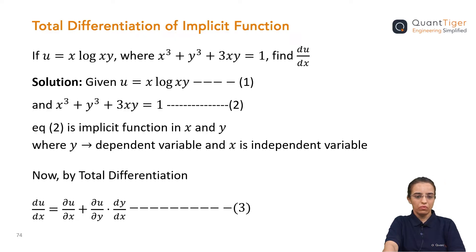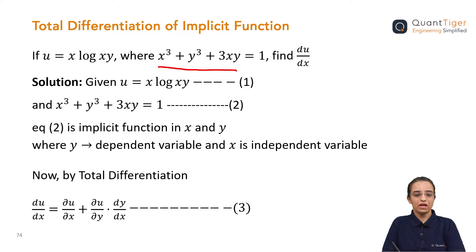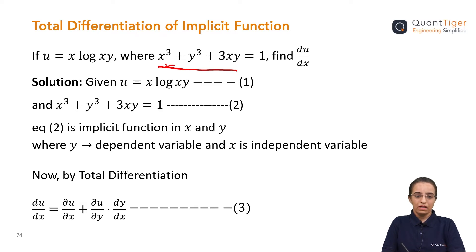We will now see a question on how we can use total differentiation for implicit functions. I have taken here an implicit function — a relation in x and y is given: x³ + y³ + 3xy. Previously, x and y values were given in terms of some other variable t, but here a relationship is given directly in x and y, so this is an implicit function.